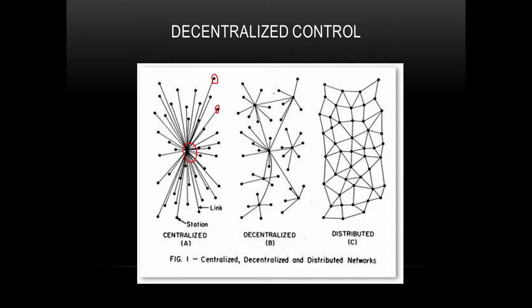Next we have a decentralized network in which there is no central authority, but there is one node connected to many other nodes, forming kind of a forest with many trees — so this has no centralized server. This is different from a distributed network where each node is connected to every other node, which is practically not possible at this moment.